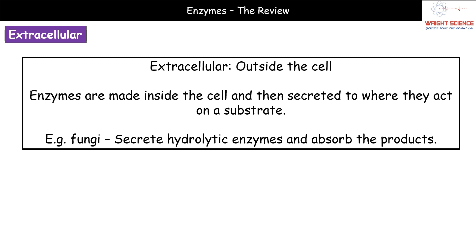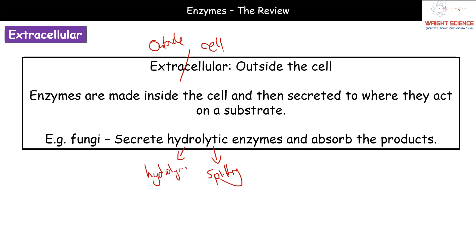Moving on to extracellular enzymes — 'extra' means outside, 'cellular' means cell, so these act outside the cell. They are made inside the cell but then secreted to where they're going to act. A good example is fungi, which secrete hydrolytic enzymes — 'hydrolytic' referring to splitting using hydrolysis. The fungi secrete enzymes onto a surface, break down whatever substance is there, and then absorb the products of the reaction.